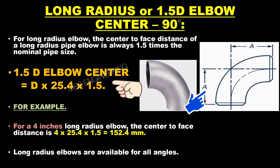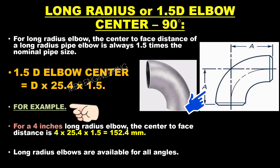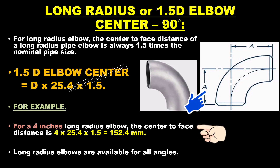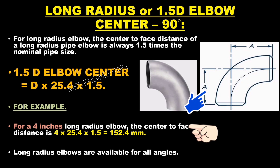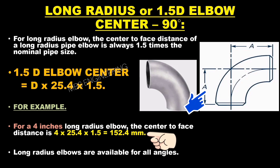The formula is: Long Radius Elbow Center = D × 25.4 × 1.5. For a 4-inch long radius elbow, the center-to-face distance is: 4 × 25.4 × 1.5, which equals 152.4 millimeters.